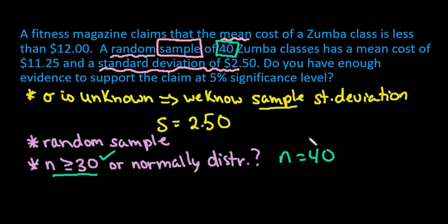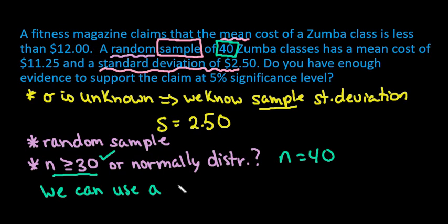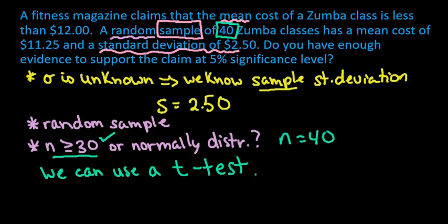It doesn't matter what the population looks like if you have a sample size greater than or equal to 30. If it's less than 30, you do have to come from a roughly normally distributed population, because something very skewed with a smaller sample size is harder to work with. Since all conditions are met, we can use a t-test — some textbooks call this the t-test for the mean.